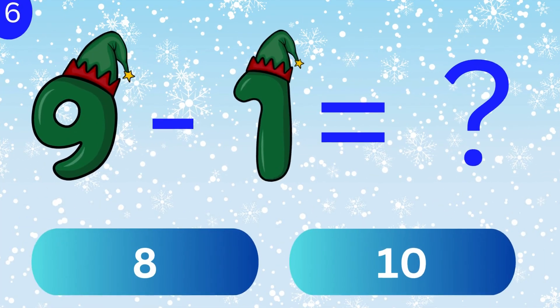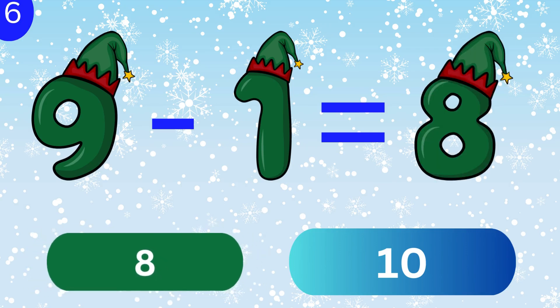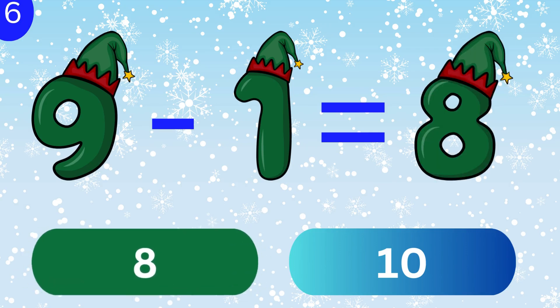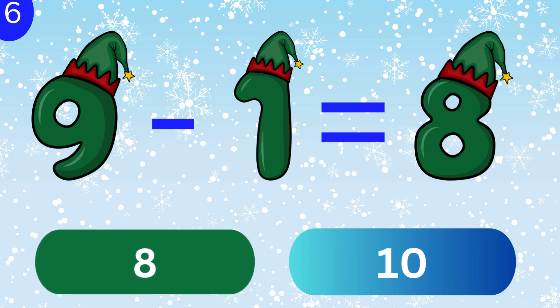What is 9 minus 1? 8. 9 minus 1 equals 8.